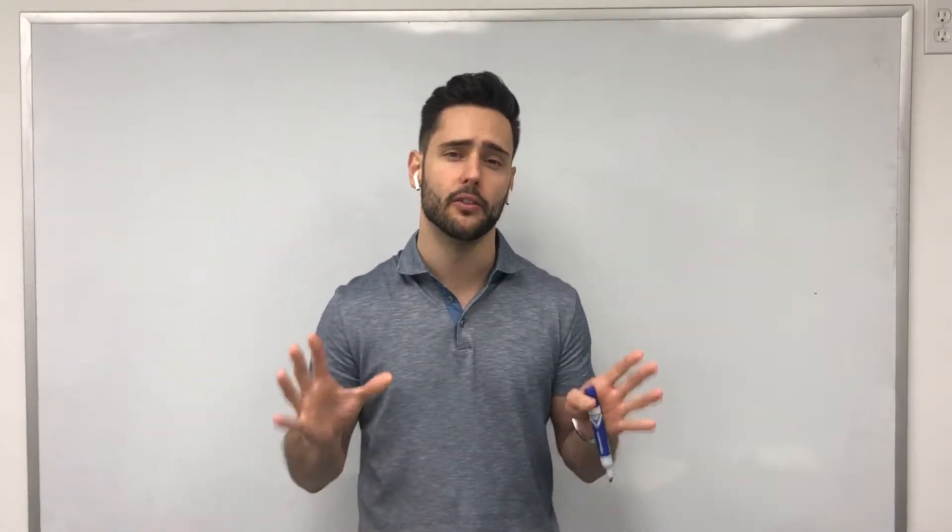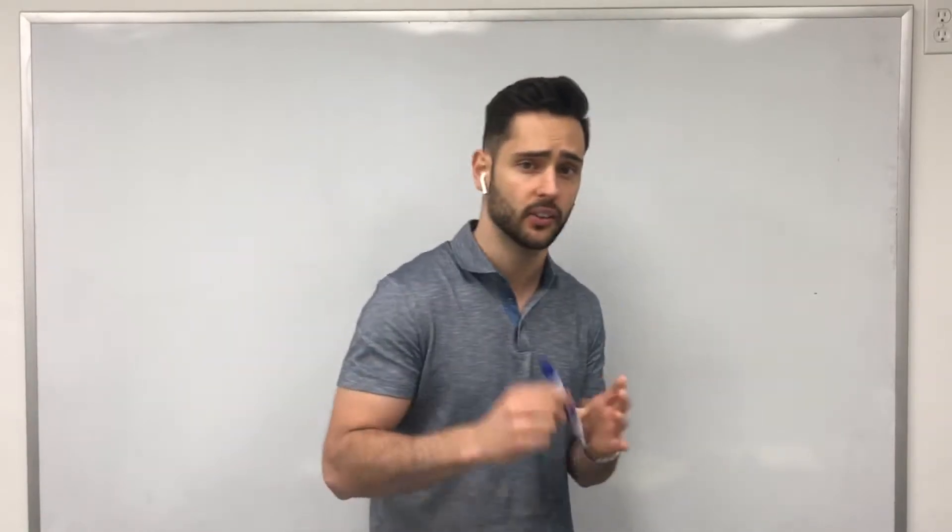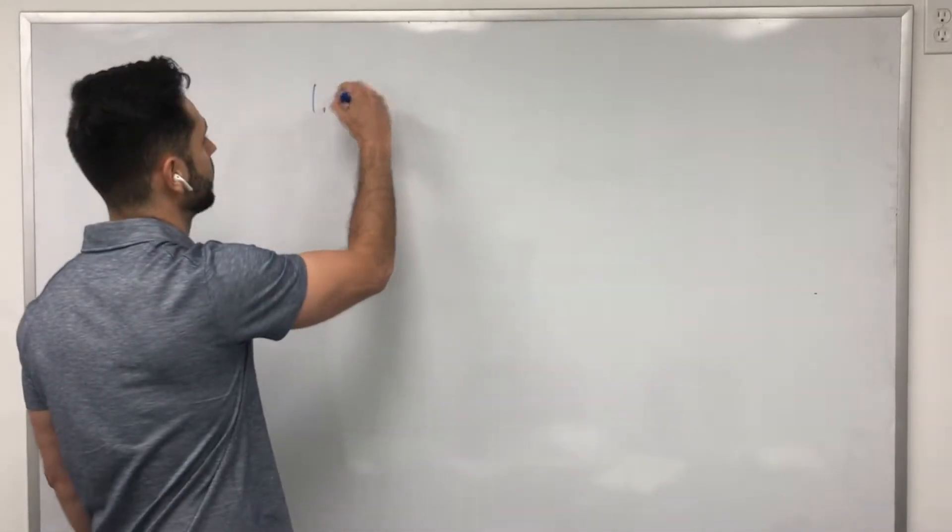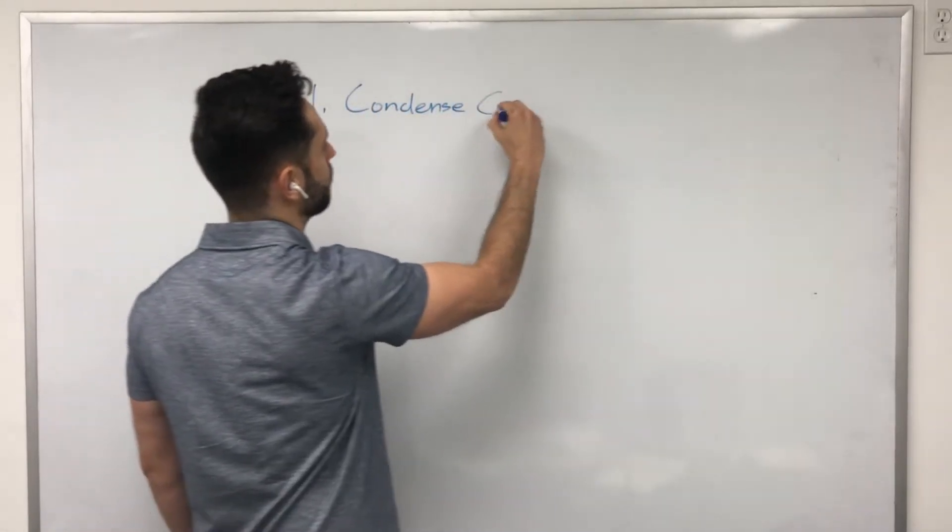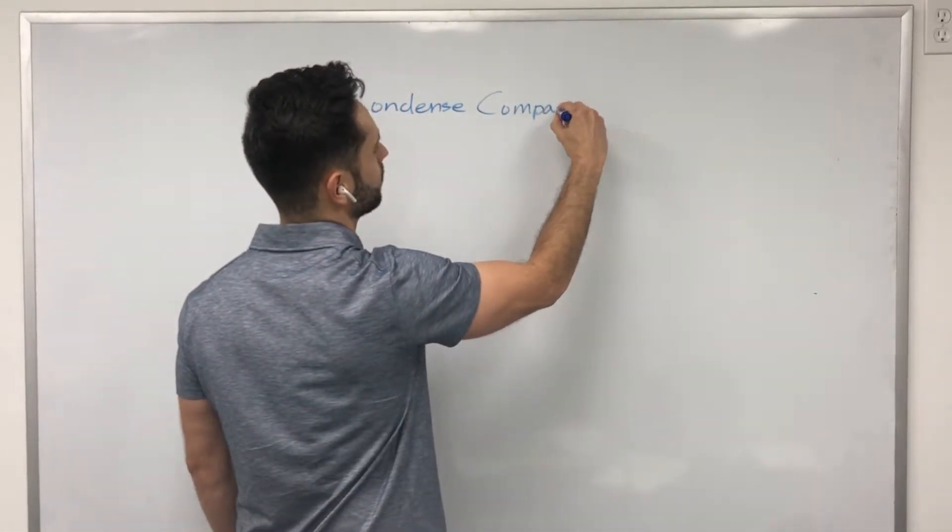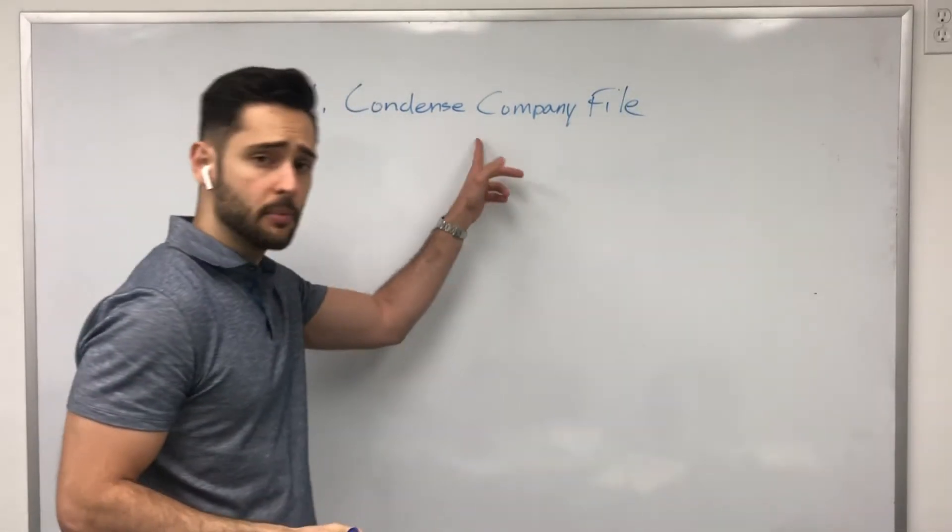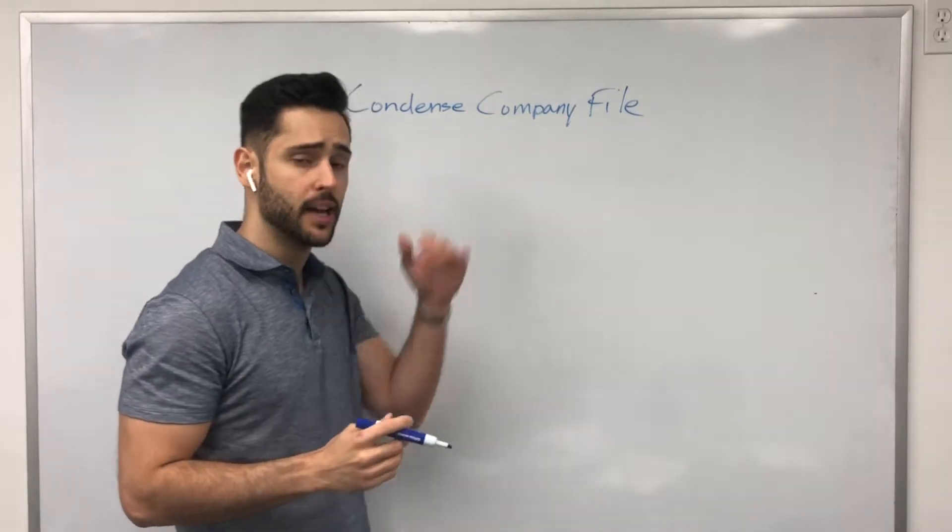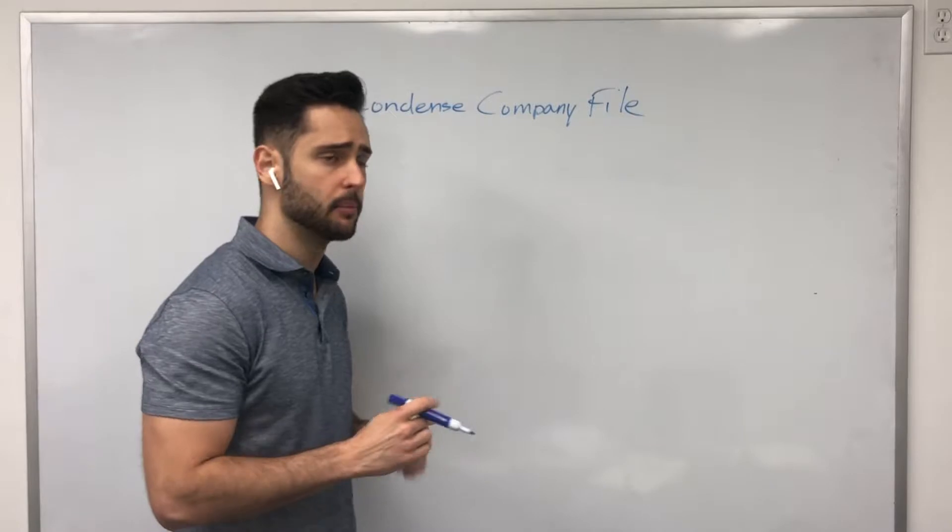Point number one, the first thing that you can do is condense a company file utilizing the tool in QuickBooks. So, number one, condense company file. Now this option, you'll find it in the file menu in QuickBooks. And when you click on it, there's two ways that you can condense the company file.